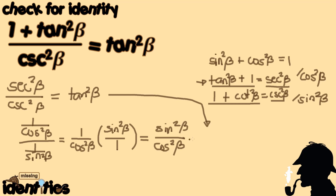We can now return to this form, because that's what we wanted to show. After using the Pythagorean identity to transform the numerator to secant squared beta and moving through the steps, we have found that the ratio of sine squared to cosine squared of the same angle beta is just tangent squared beta — the same as our original right-hand side. This means we have verified the given identity. This case for verifying the identity is now closed.